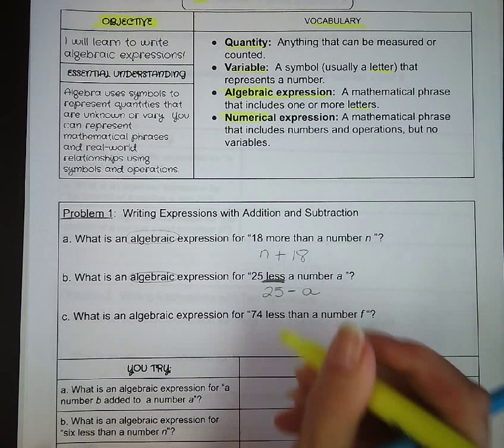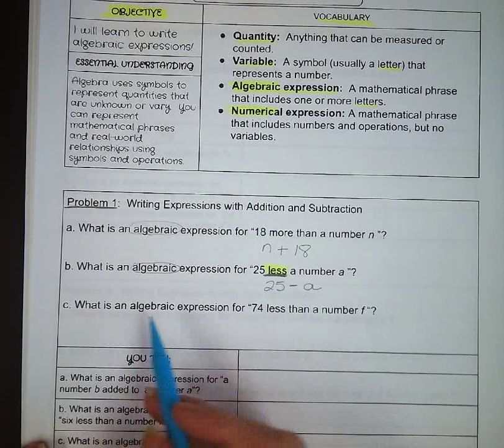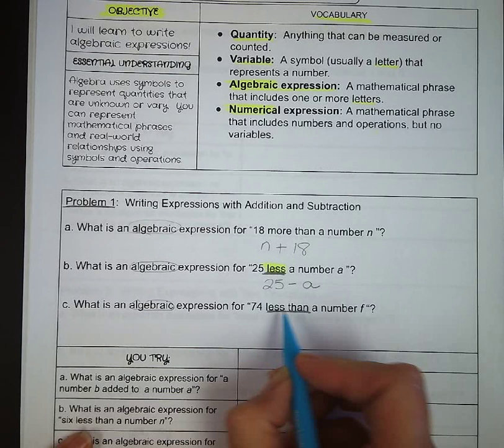Alright, problem C, what is an algebraic expression for 74 less than a number f? So less than means we're going to start with f, and we are taking away 74.